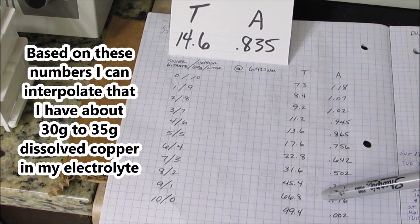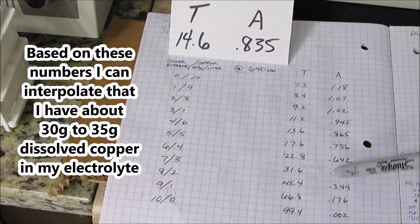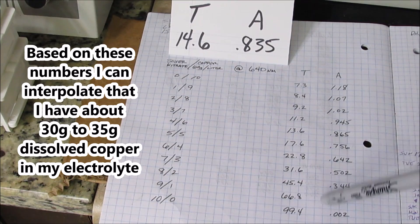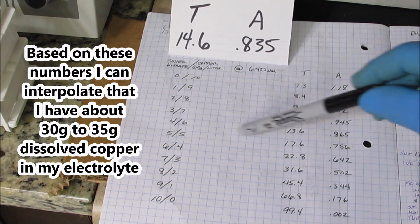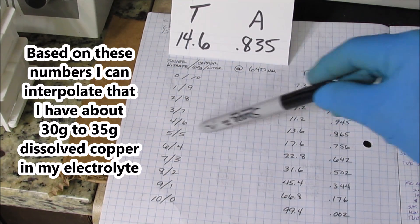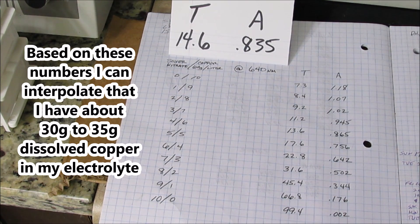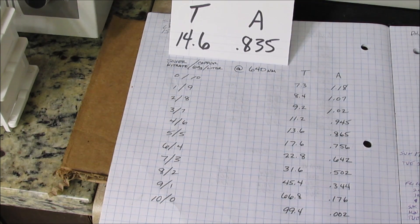Further down the scale, it's usable electrolyte because I have less concentration down in this area. I'm right in here, so I'm about halfway there with my copper concentration, so I should be able to use this electrolyte for another refining.